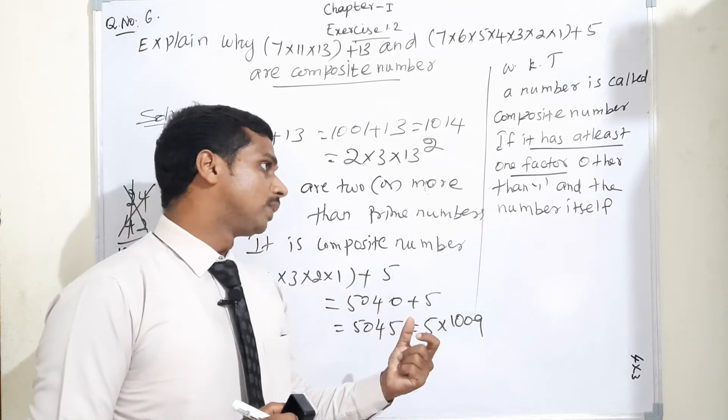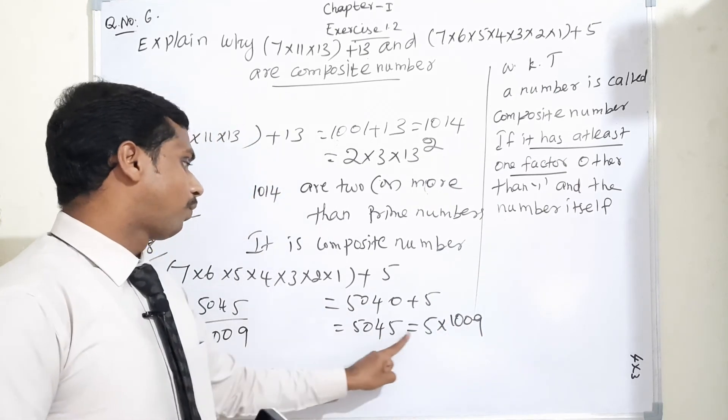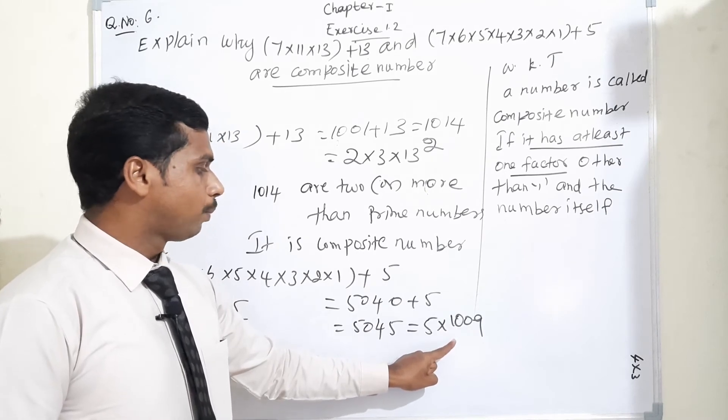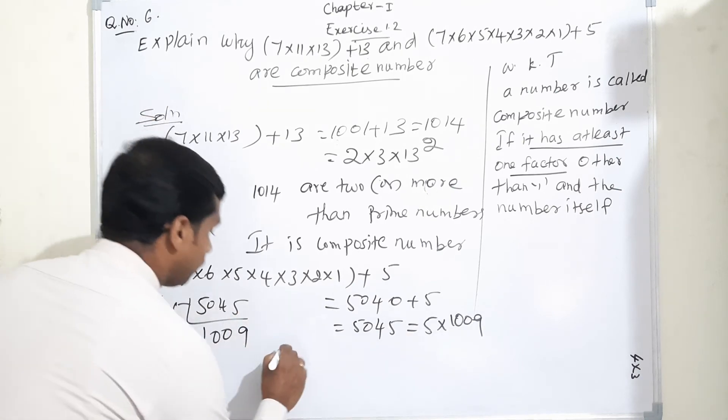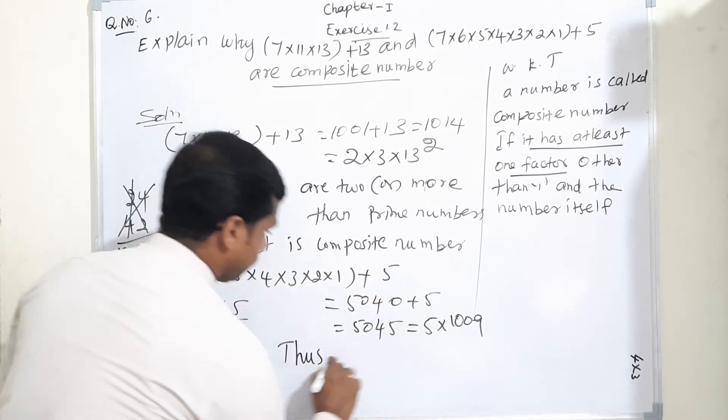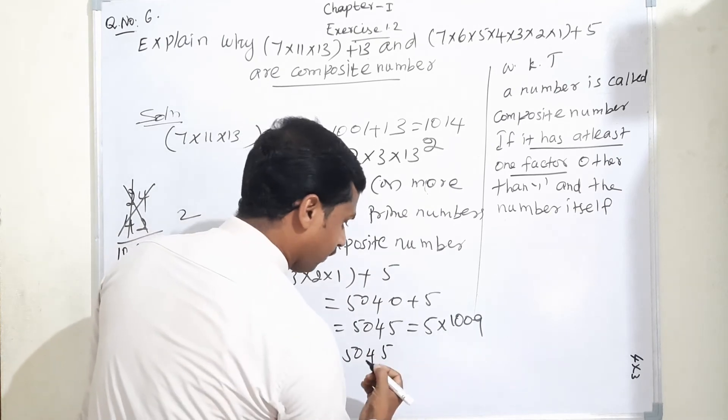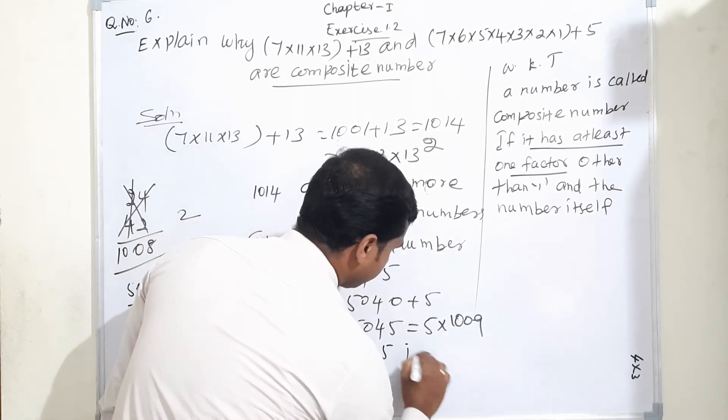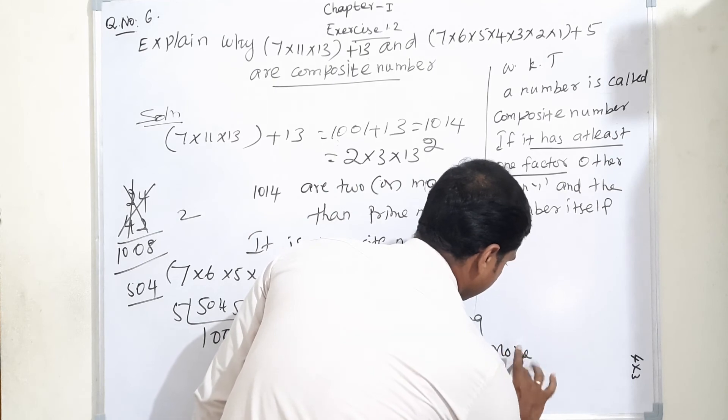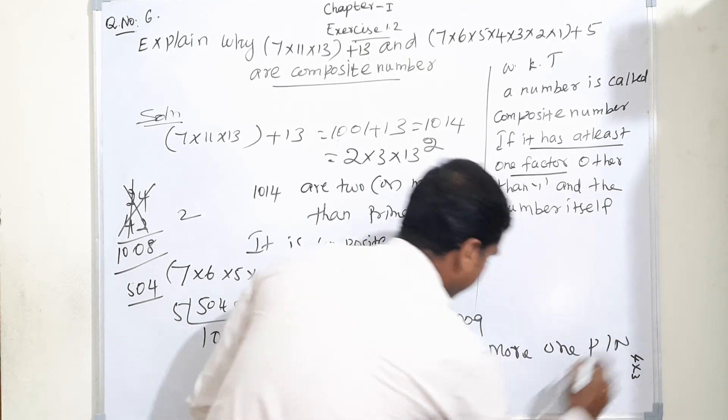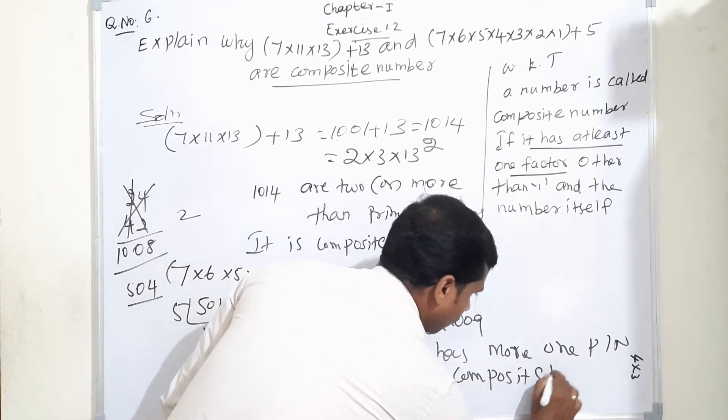If it has at least one factor - here 5 is there, 1009 is there. 5045 divided by 5 gives 1009, divided by 1 is also possible. So at least more than one factor is there. Thus, 5045 has more than one prime factor. Therefore, that is why it is a composite number.